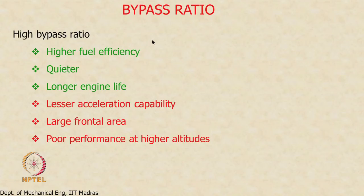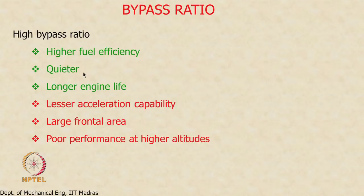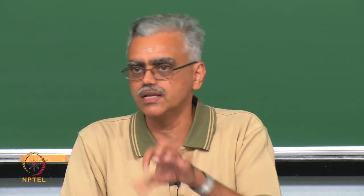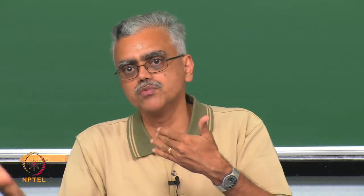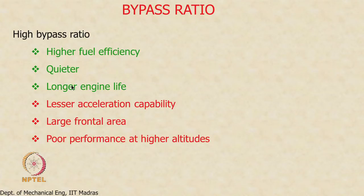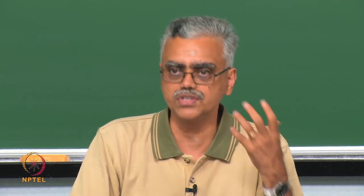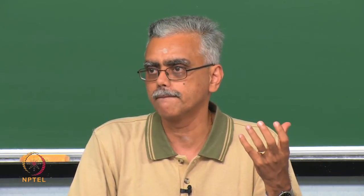Let me summarize the advantages and disadvantages of a bypass engine. For high bypass ratio turbofan engines: definitely higher fuel efficiency because the propulsive efficiency is better; the engines are quieter because the cold air mixes with the high-speed hot air, reducing velocity gradients as the stream mixes with the ambient; and engine life is longer because 80% of the thrust is produced by components not exposed to high pressure or high temperature.